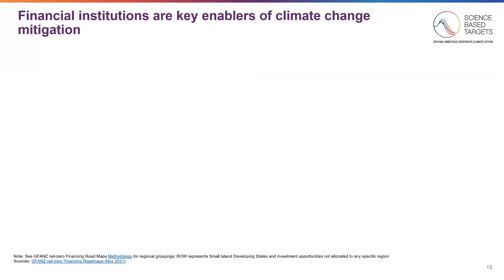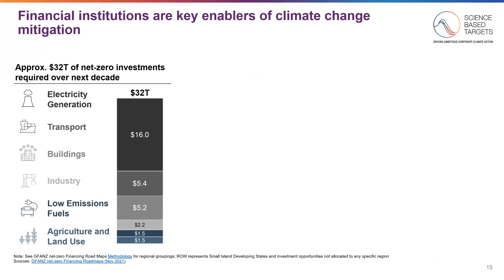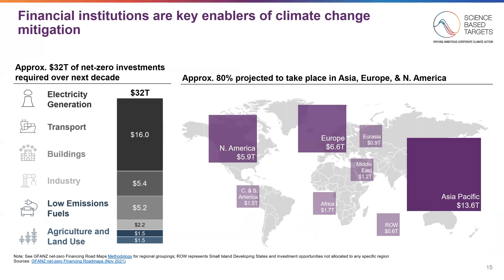Even as policymakers and regulators ramp up their engagement on climate, financial institutions are being looked to as other important agents for change. The Glasgow Financial Alliance for Net Zero estimates that approximately $32 trillion US dollars will be required to catalyze energy transformation across several key sectors in the next decade, with the largest investments required in electricity generation, transport, buildings, and low-emission fuels. These projections indicate that 80% of that investment will take place in North America, Europe, and Asia Pacific. Projected investment in Asia Pacific is larger than that in North America and Europe combined, due to the large population and rapid industrialization in that region.